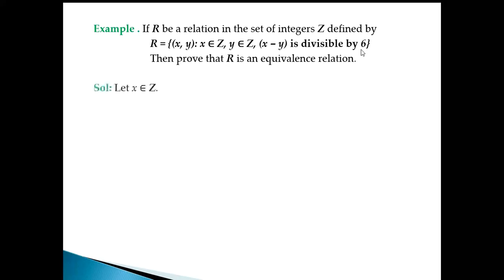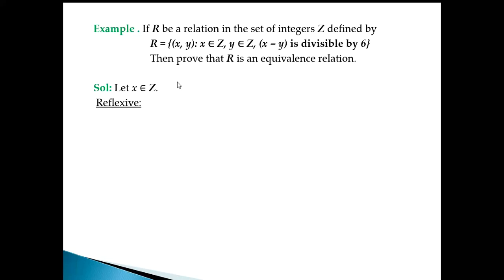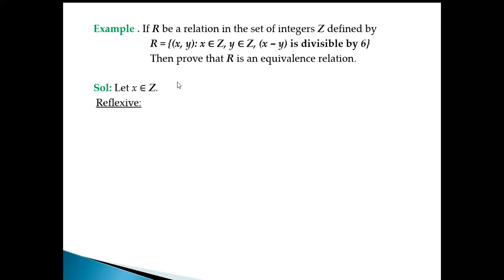We have to prove that R is an equivalence relation, meaning the elements must satisfy the property that x minus y is divisible by 6. We assume x belongs to the integers. First, we prove reflexive, then symmetric, then transitive. For reflexive, we take the same element, so we take the pair (x, x).